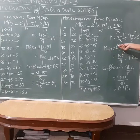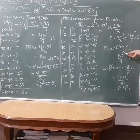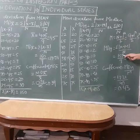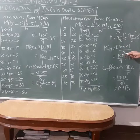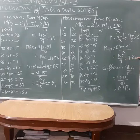Now we fill in the formula. Mean deviation from median equals the summation of |x minus median| divided by n. The total of |x minus median| is 155, and n equals 9. After calculating, the value comes to 17.22.